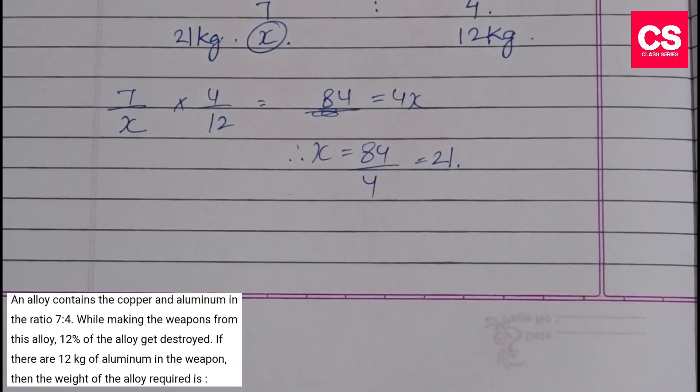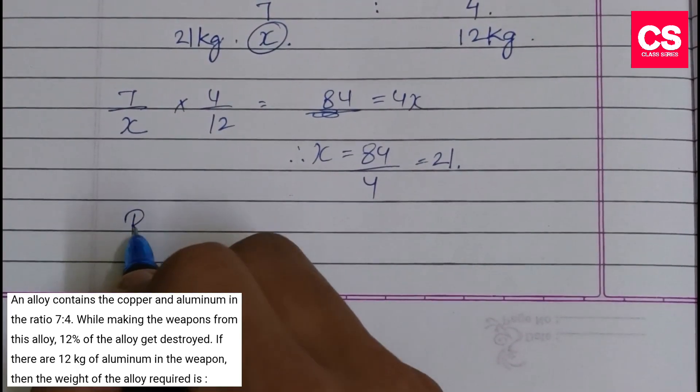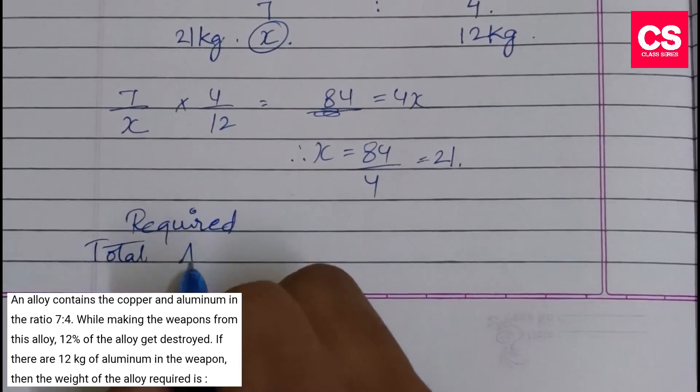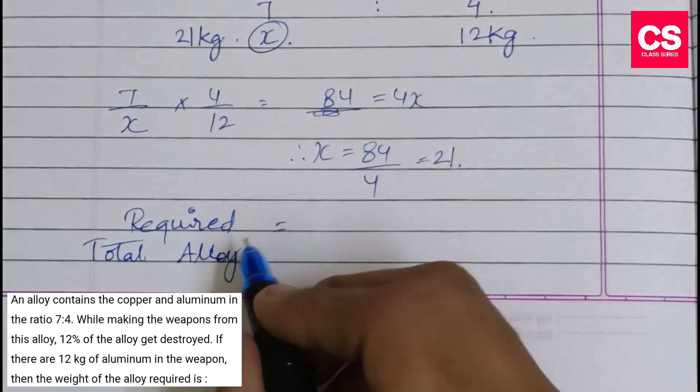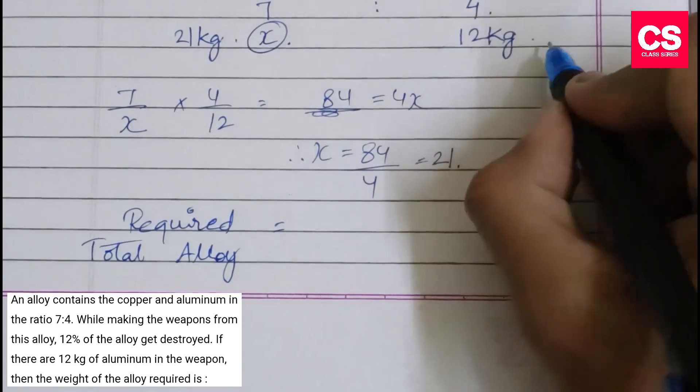The required total alloy equals 21 plus 12, which gives us 33 kg. This is the amount in the weapon.